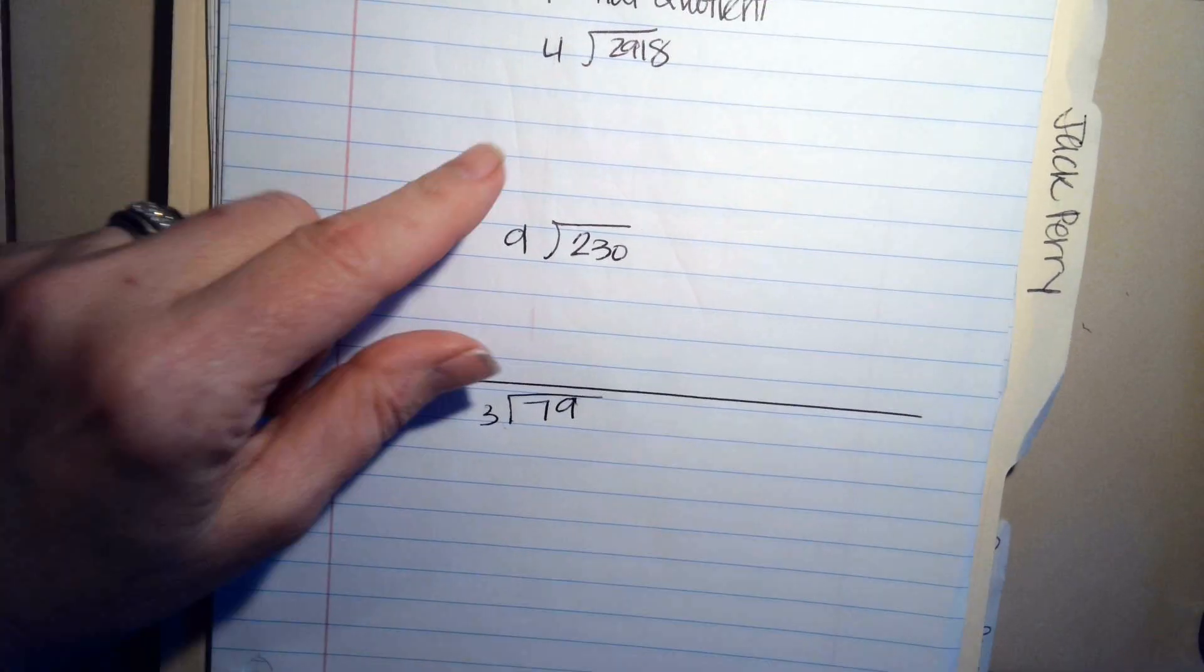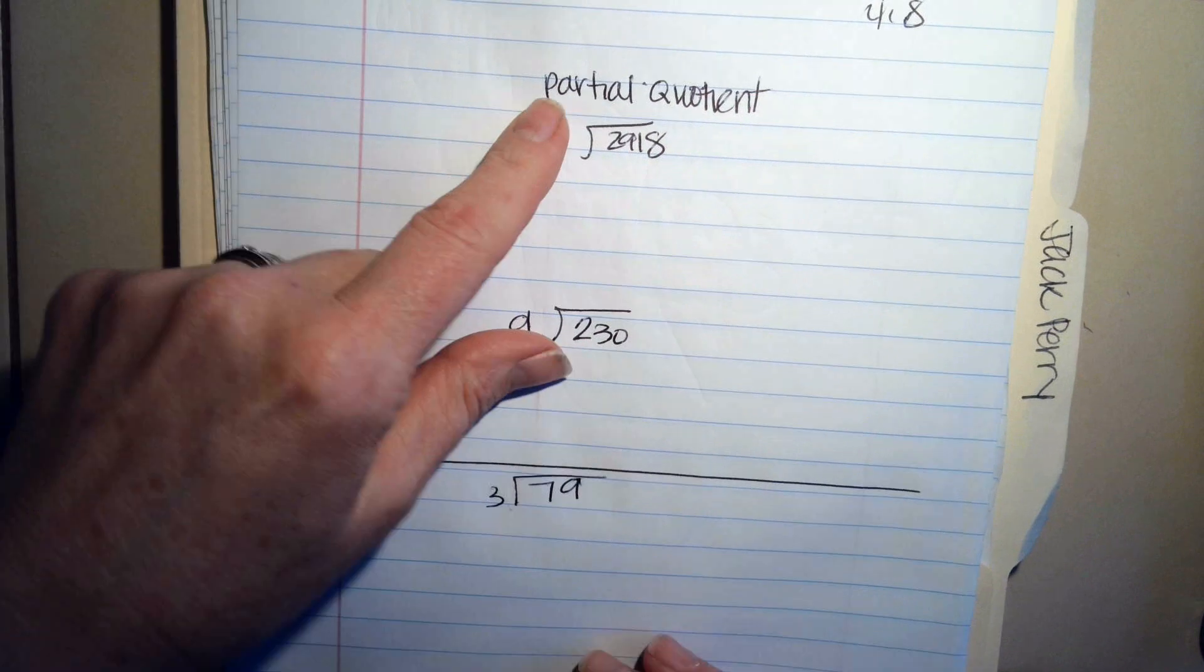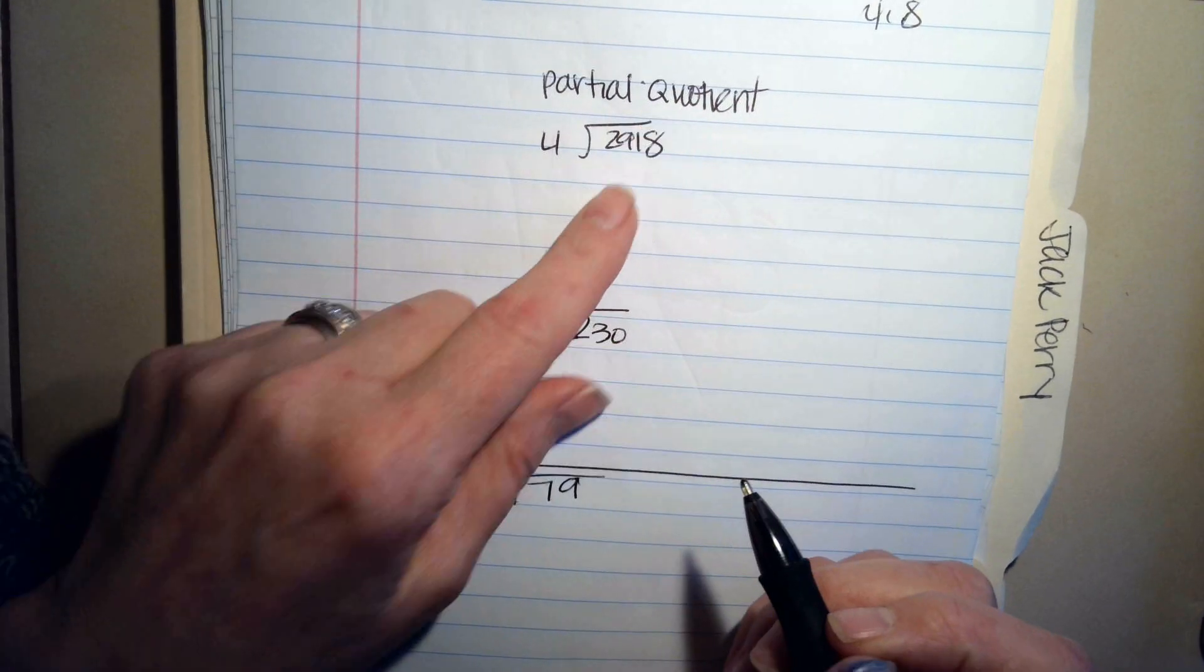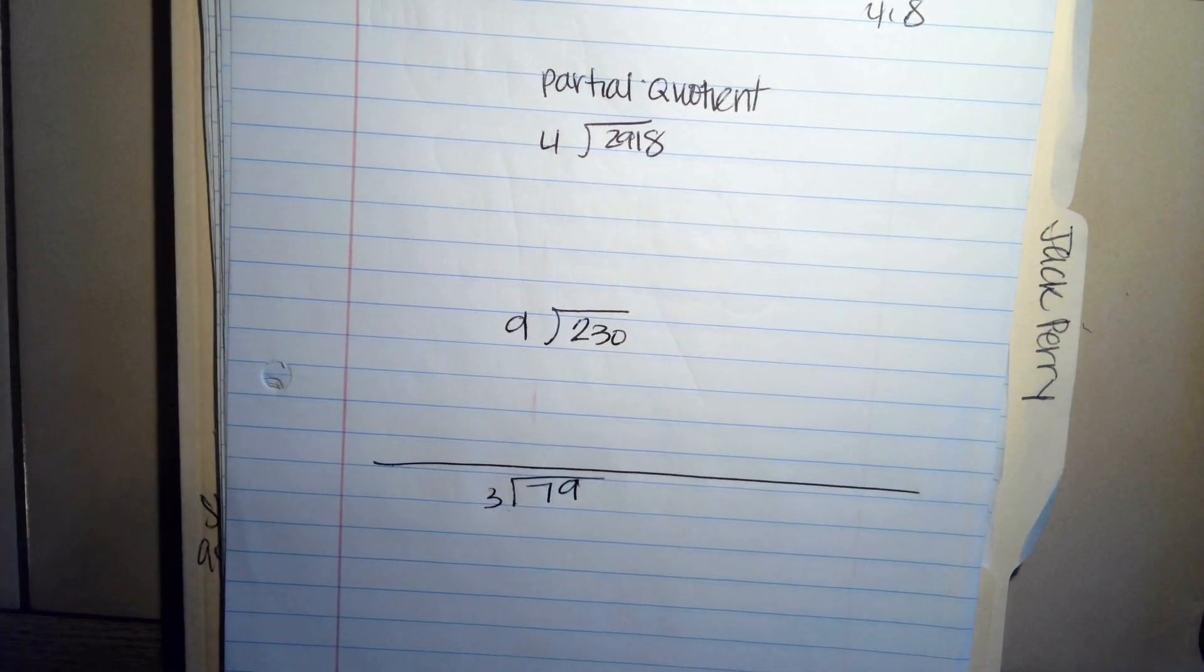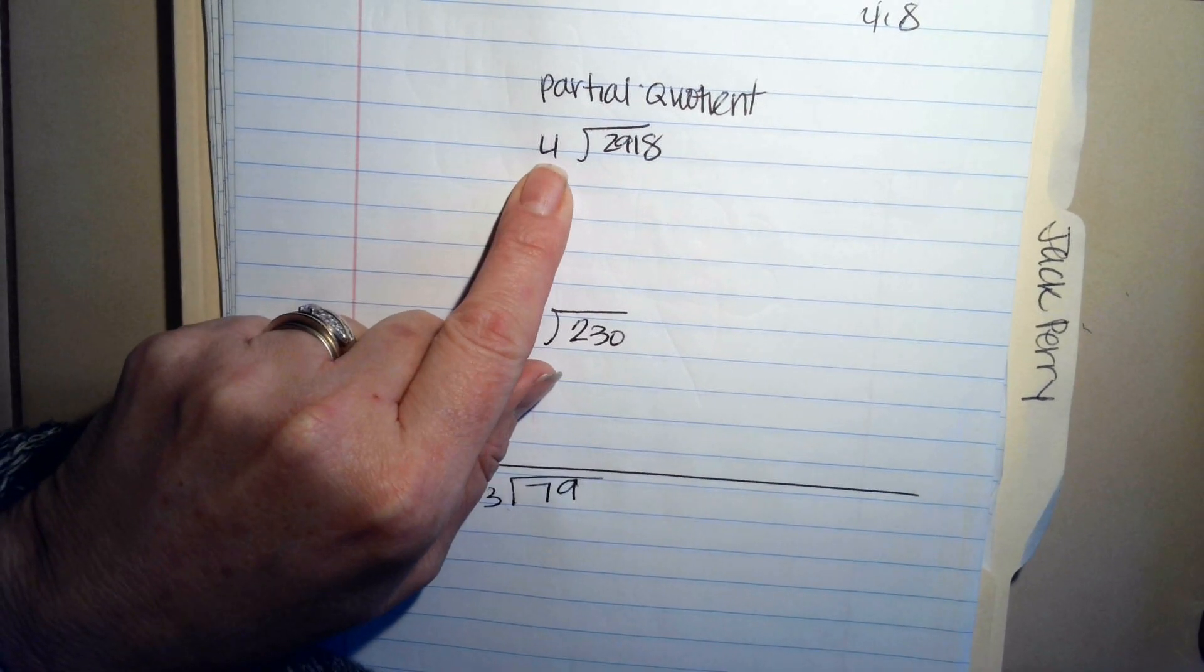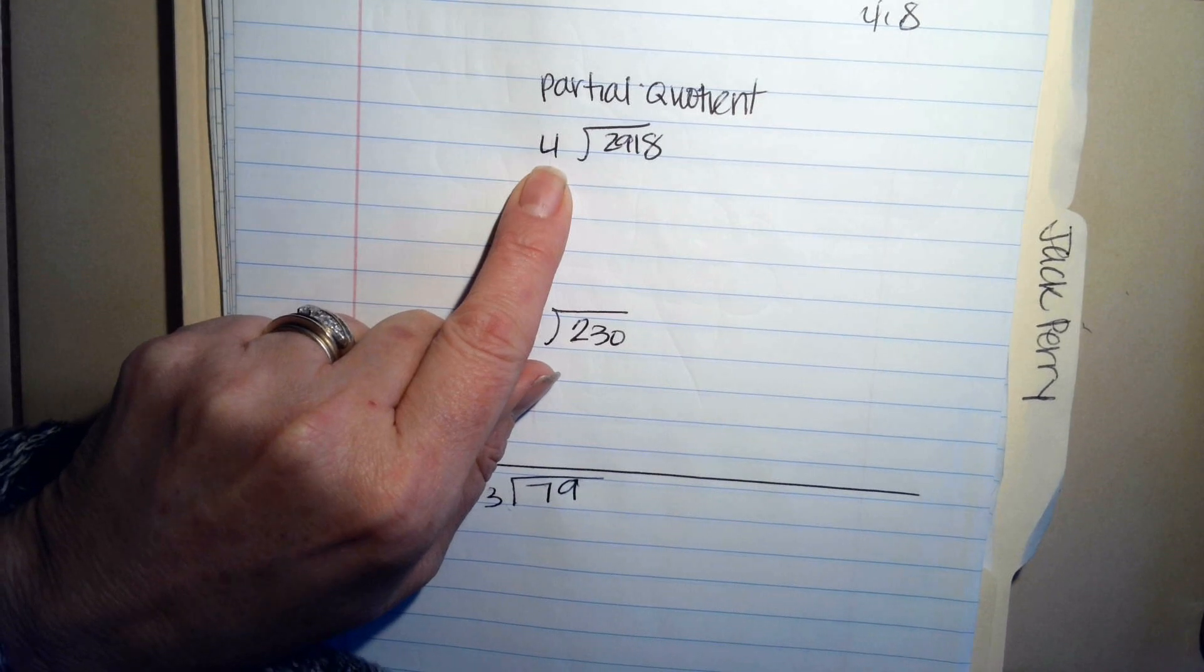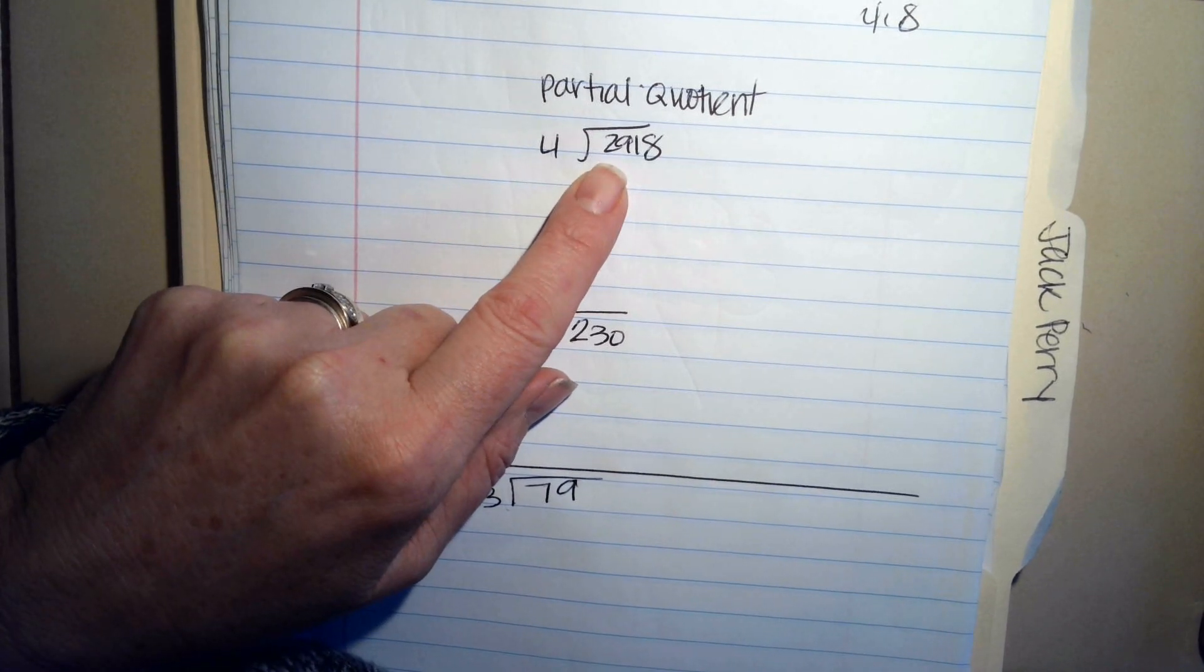When they're saying this was 4.5, they want you to use partial quotient. That means that you have to figure out what's the closest you could come to try to estimate how many times 4 goes into 2,918.